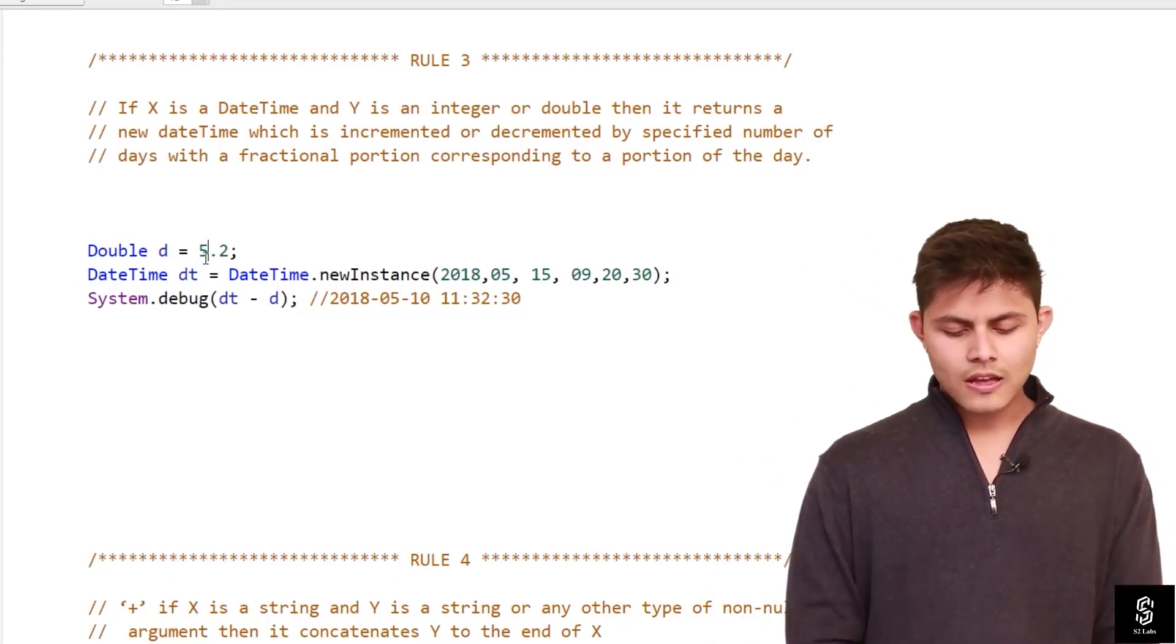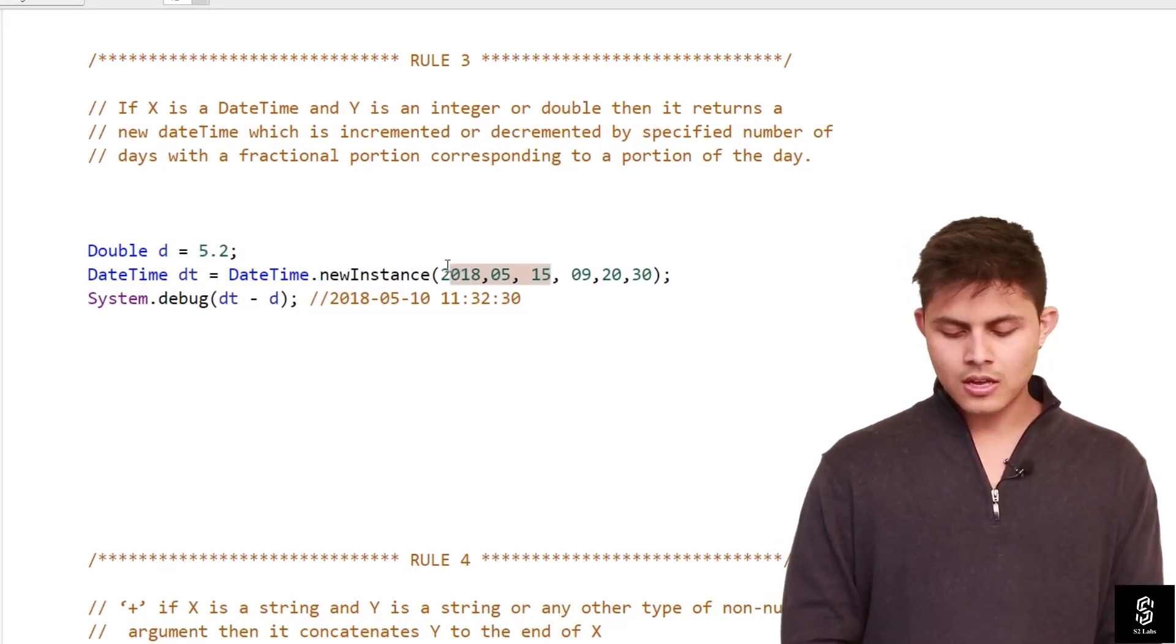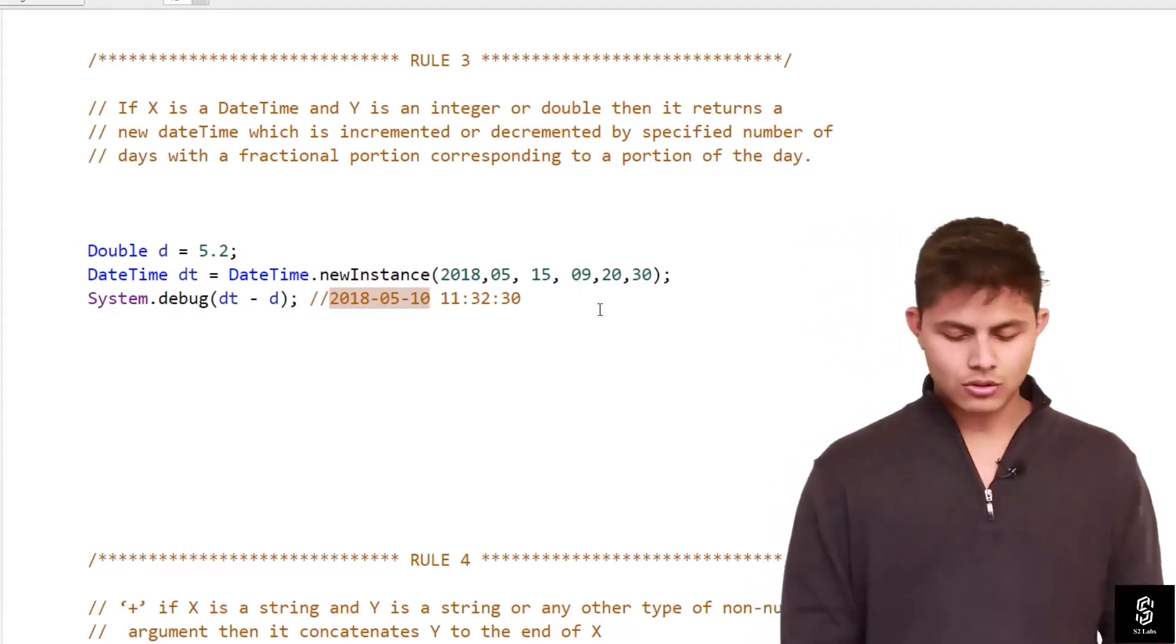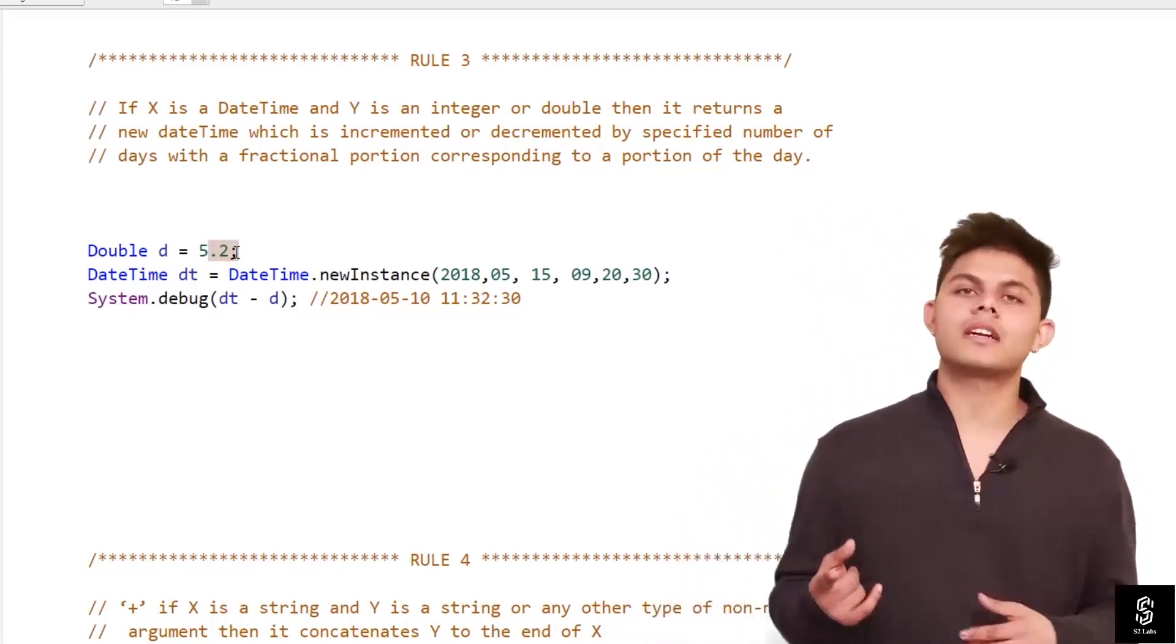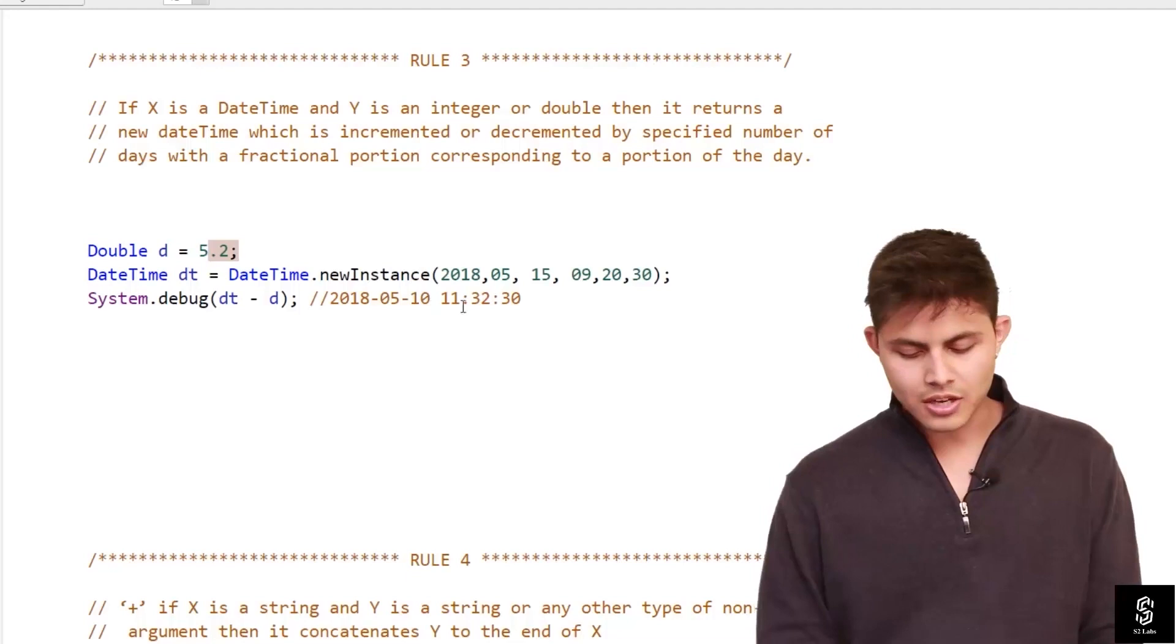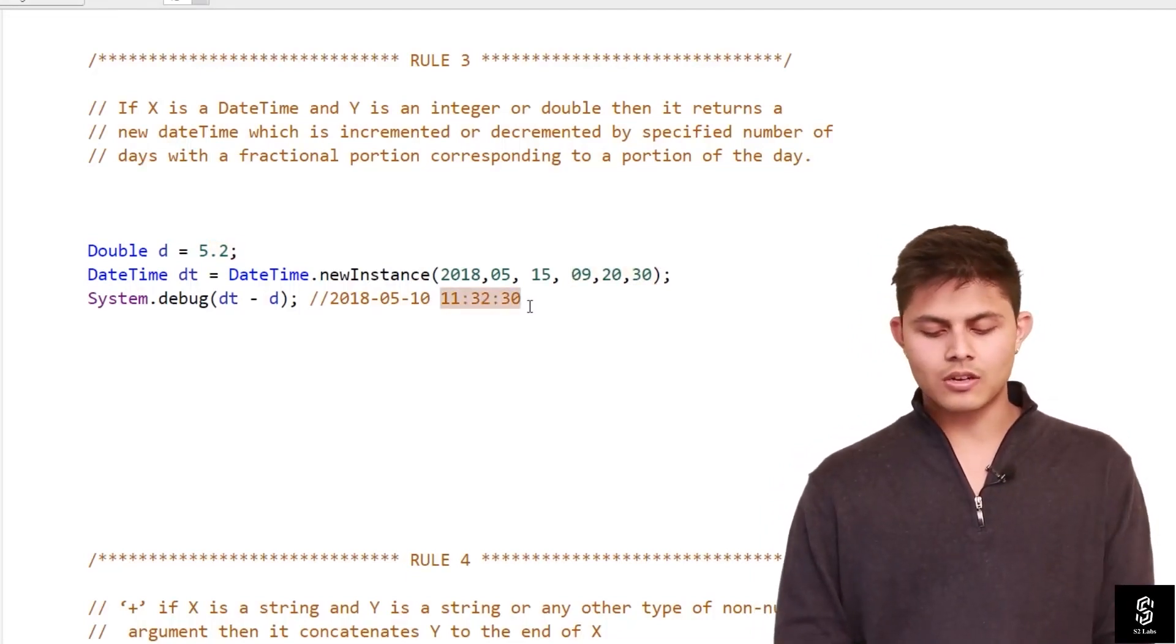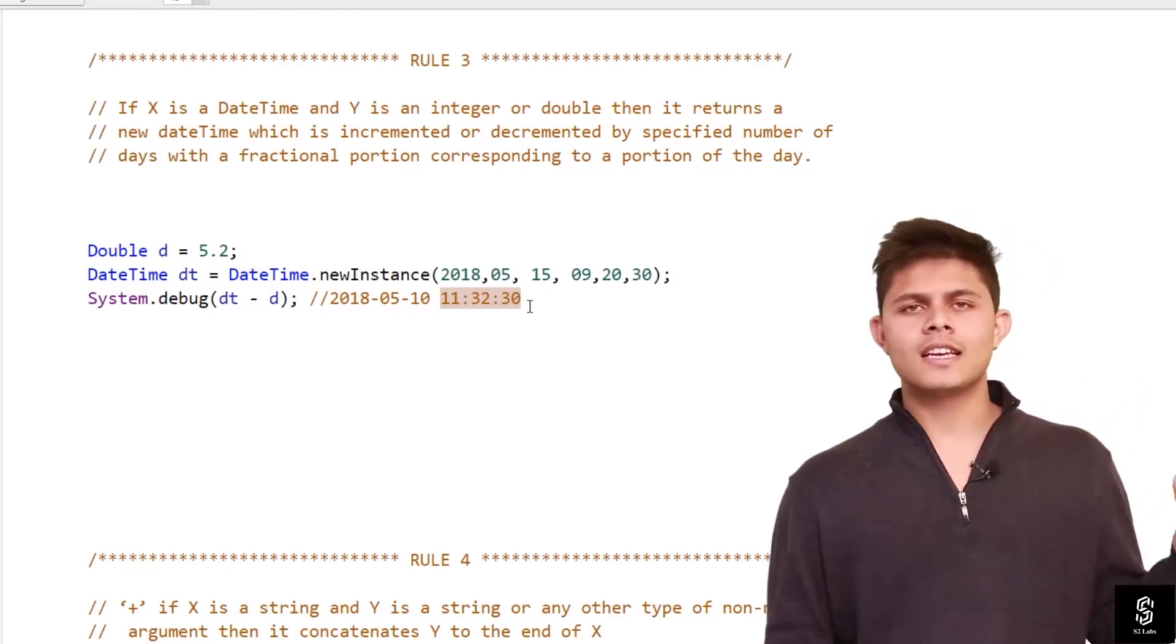It will reduce the non-fractional part which is 5 from the date, which is 15th May 2018. That's the reason it will show 10th of May 2018 because it will decrease 5 days from it. And the fractional portion will be decremented from the time, the portion of the day that needs to be reduced. So if we reduce the time from here, this is the time we'll get: 11 hours 32 minutes and 30 seconds.